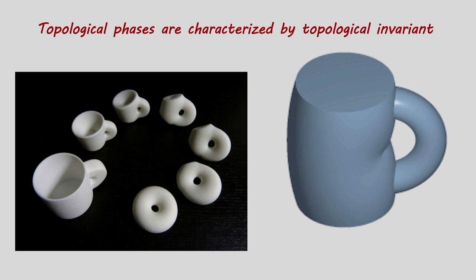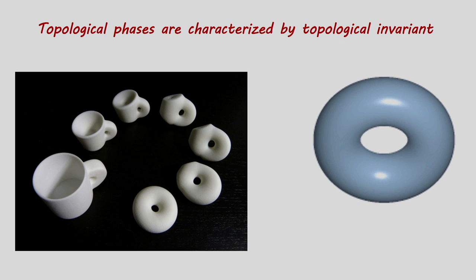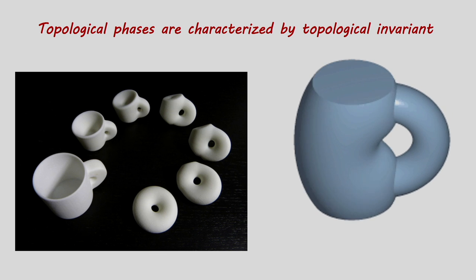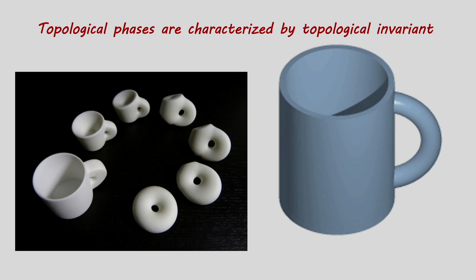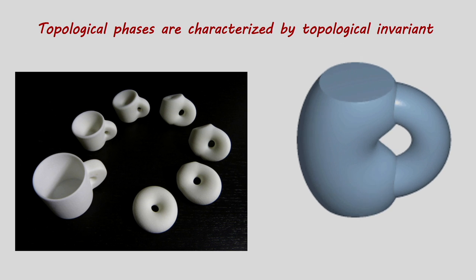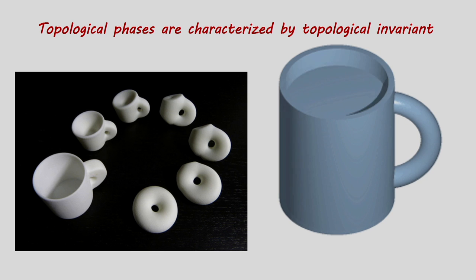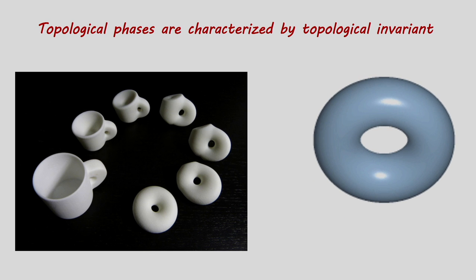When we say a certain system is deformed, what we mean is that the Hamiltonian of the system is deformed with respect to changes in certain parameters. If it can be smoothly deformed and gives rise to an invariant that remains unchanged through this process, then the Hamiltonian denotes a topological system.